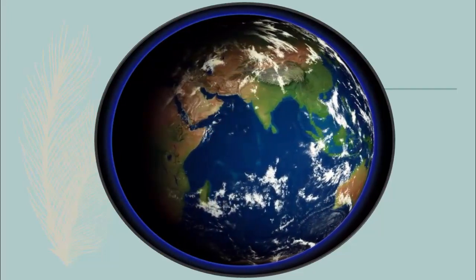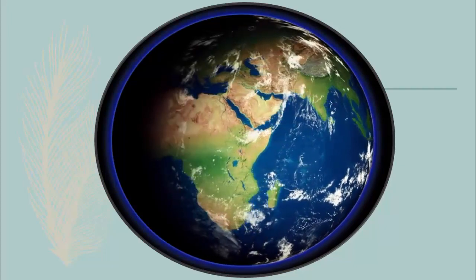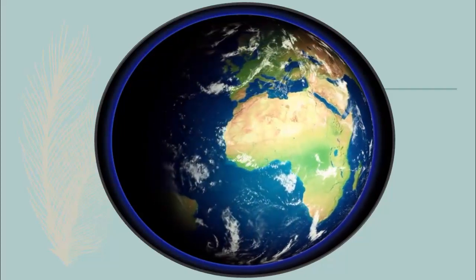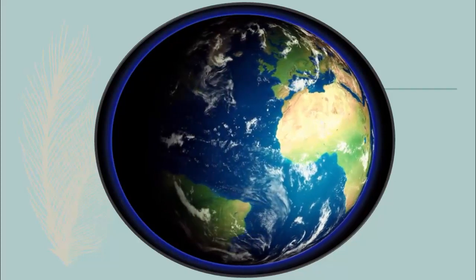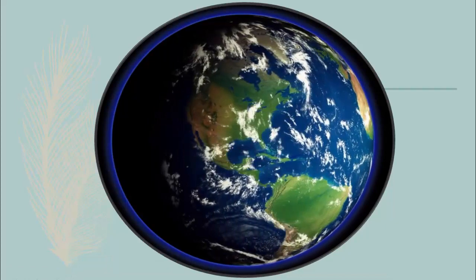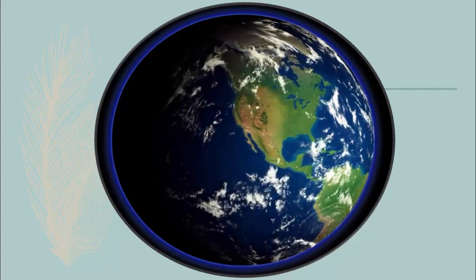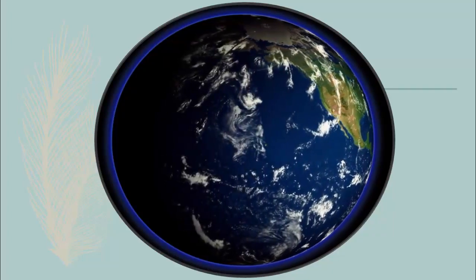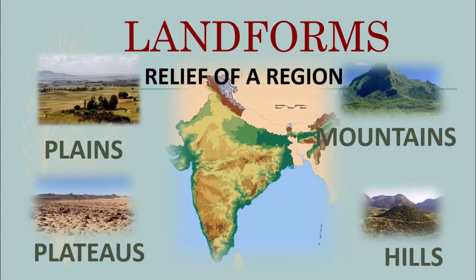The land on which we live is not uniform in size, shape, or height. In some places it rises high to form hills and mountains with steep slopes, while in other areas it may be low and flat for long stretches. As you travel from one place to another, you might witness changes in the height of places. This is known as the relief of a region. Look at this picture — it shows you the relief features of India.